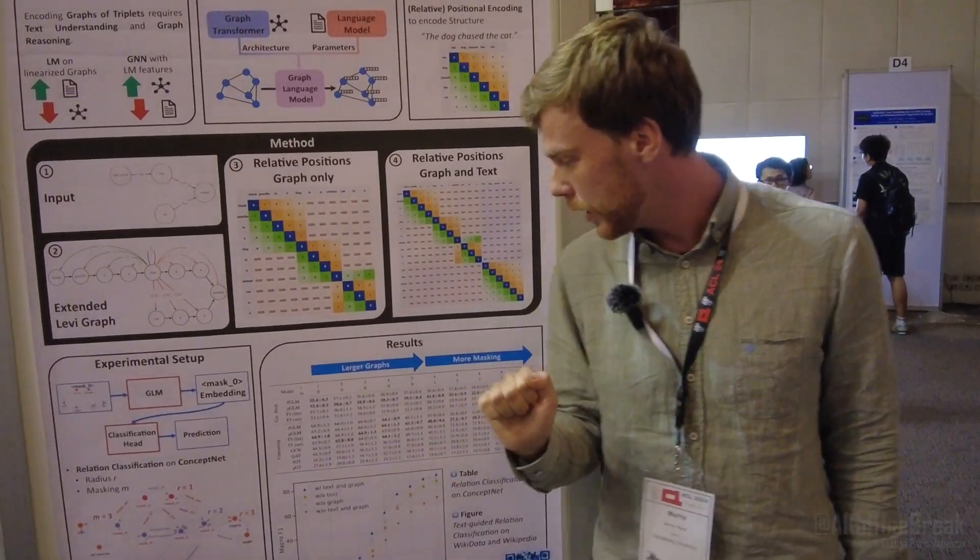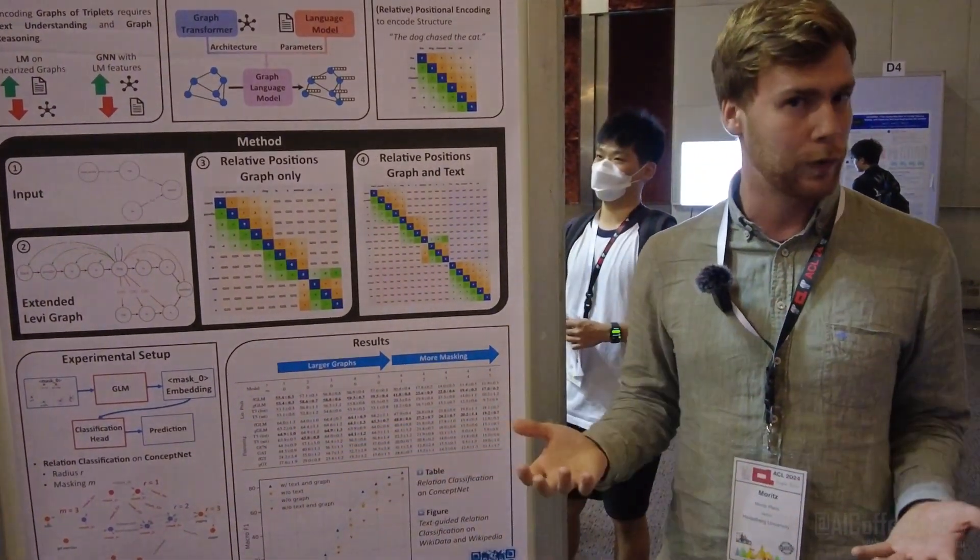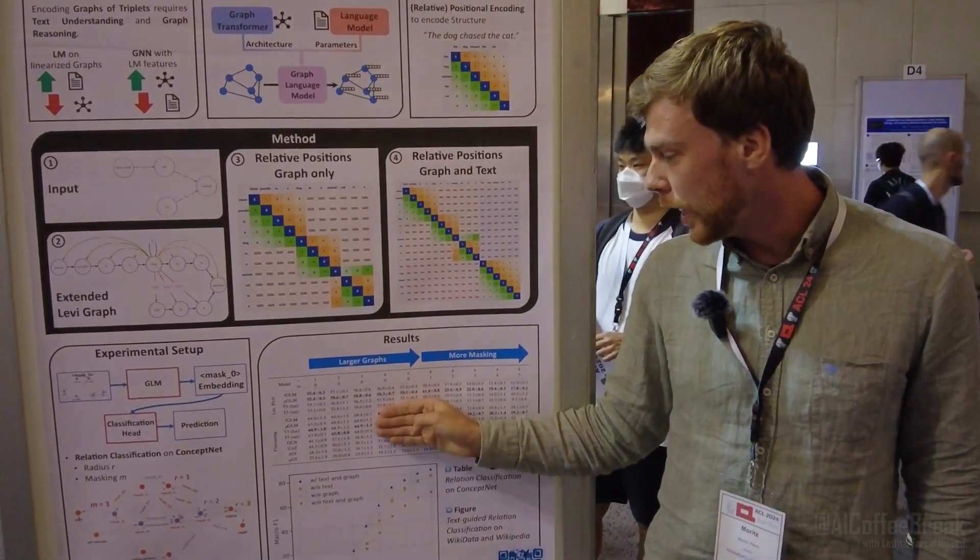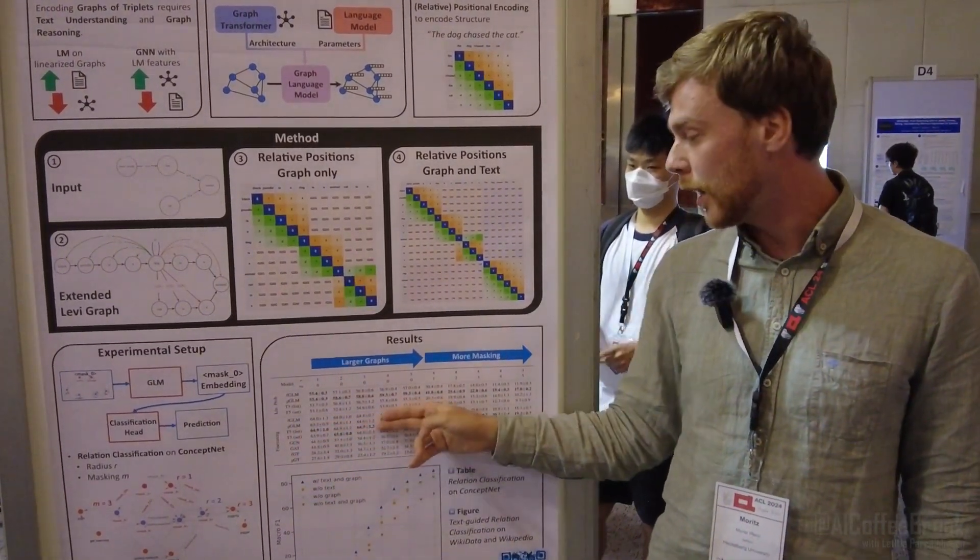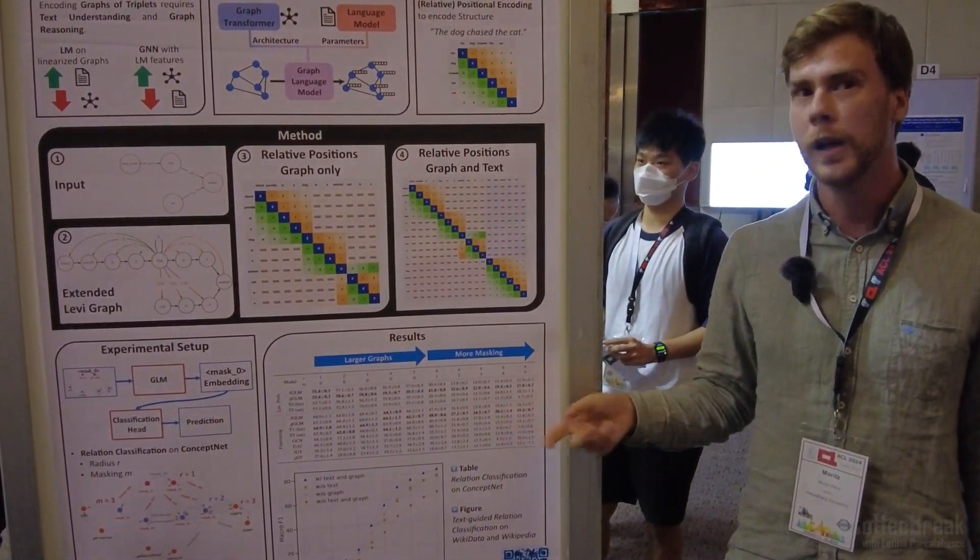If we train the graph language model as well as the classification head, then we're in a normal fine-tuning setting. The scores overall improve, and we see that for small graphs up to a radius of three, the language model baselines are better than our method. However, for larger graphs or when the graph structure is more important, our method is better again.